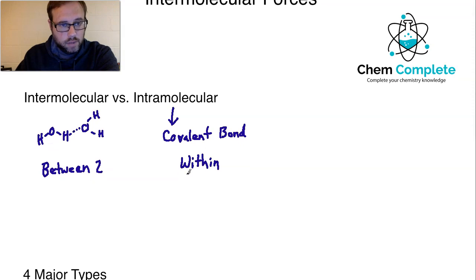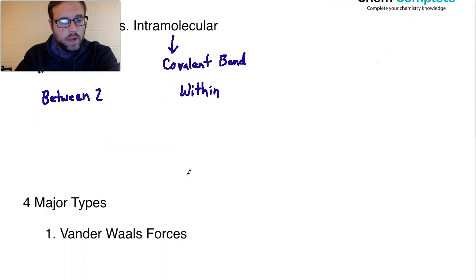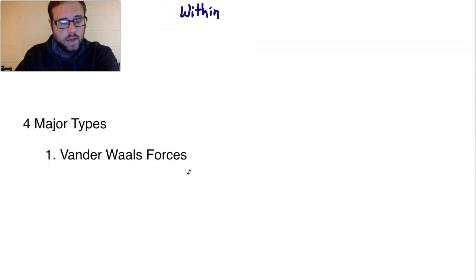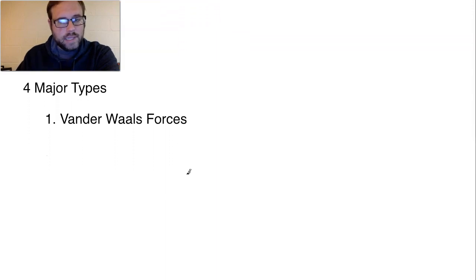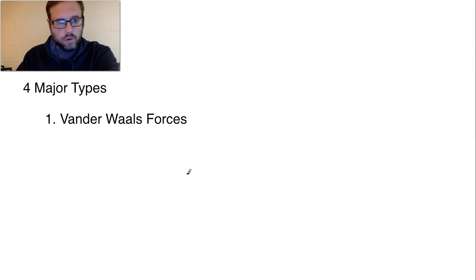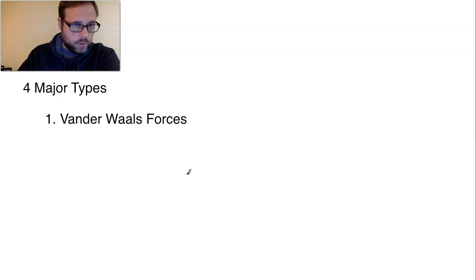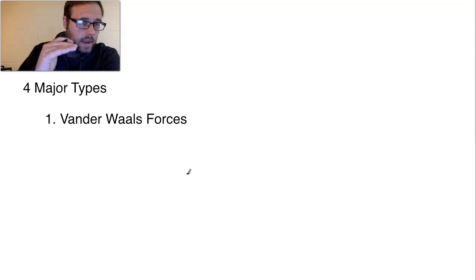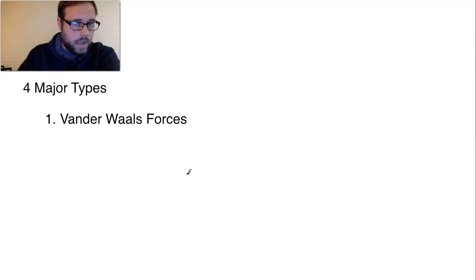We are focused on intermolecular forces here today, and there are four major types. The way I have this list organized, we're going to start with the weakest of the bunch, which will be Van der Waals forces — sometimes known as London forces or dispersion forces. As we move up the list, the forces get more and more powerful in terms of their effect and their ability to bind molecules together.